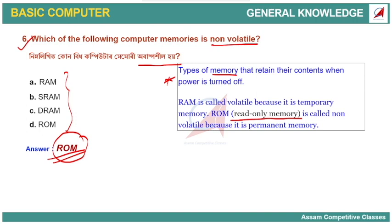On the other hand, RAM — Random Access Memory — is a volatile memory, meaning it is temporary memory. But ROM is a permanent memory, which means it is a non-volatile memory.